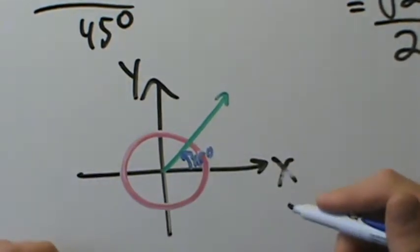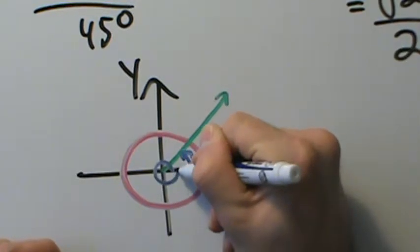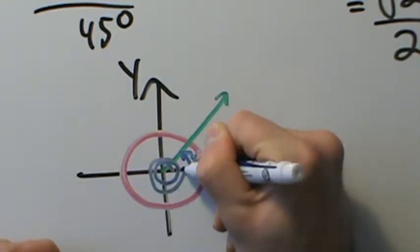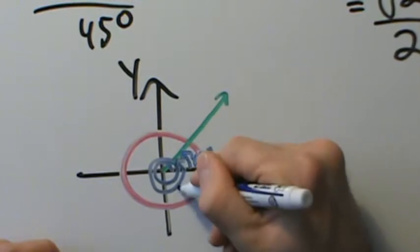So if we want to get to 765 degrees, we have to go 360 degrees, 720 degrees, and then add 45, so we're at 765 degrees.